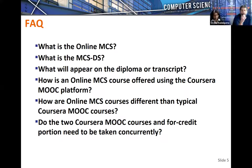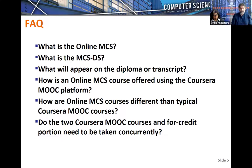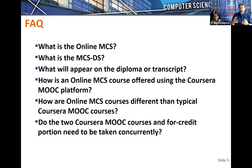Do the two Coursera MOOC courses count for credit? No. If you complete those MOOCs, you don't have to sit through the same lectures again, but you will need to complete all the additional material when you take it for credit. Taking Coursera MOOCs is like sitting in a class before you actually take it for credit. We won't count any work done for MOOCs as part of the class. Each four-credit class consists of two MOOCs worth of lectures plus additional machine problems, programming assignments, exams, tests, and other assessments.